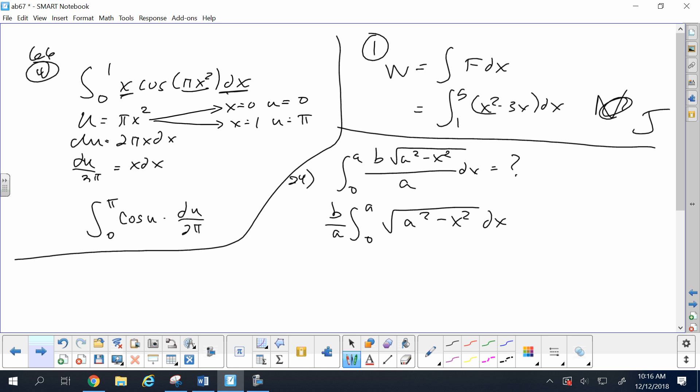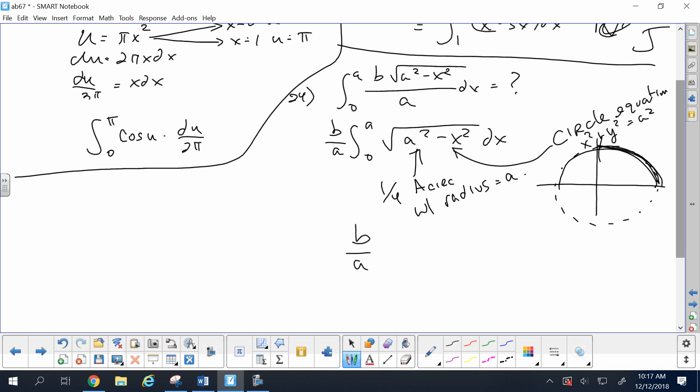In 24, the idea is you isolate the root. I hope you recognize that is a circle equation. However, instead of the whole circle, it's only the top half because of the positive root, and only the right half. So it's actually one fourth. This represents one fourth the area of the circle with radius a. So it's 1 over 4 pi r squared.